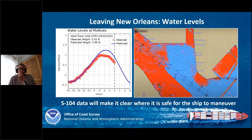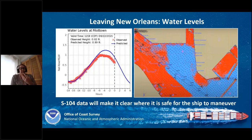S100 standards for water level data — S104 — will make it clear where it is safe and not safe for a ship to maneuver. Typical water level data is displayed in time series plots, which are not very useful in a geographic or graphical representation layered with other data. Through S100 interoperability, water level information combined with high-resolution bathymetry allows determination of go/no-go areas based on water level, taking into account ship's characteristics to determine if navigation is safe for that vessel.